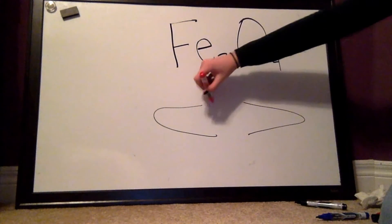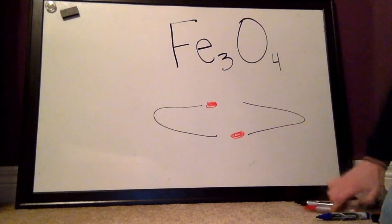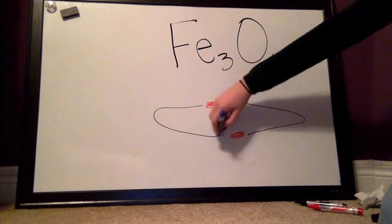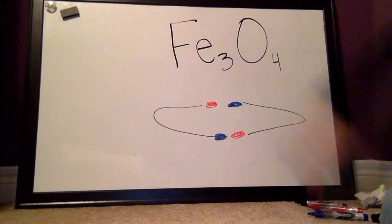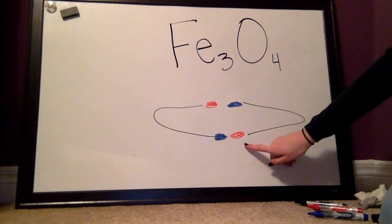All magnets have a south pole and all magnets have a north pole. Opposites attract, so the south pole attracts the north pole and the north pole attracts the south pole. All magnets also have a magnetic field.